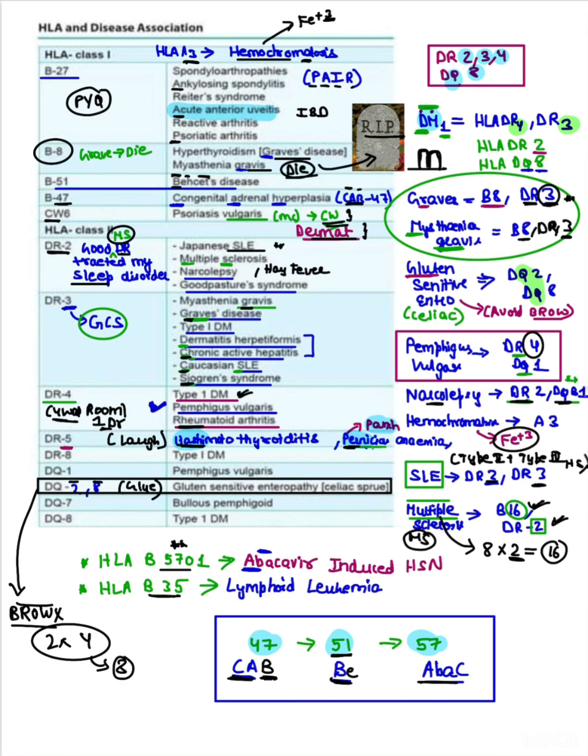I think now hope it helps you. Suppose someone asks you psoriasis vulgaris: psoriasis most commonly in dermat posting, that is CW6. Now coming to ankylosing spondylitis: this comes to your PAIR mnemonic, so this is B27 associated. Behcet's disease, that is HLA-B51, B at holy saint.